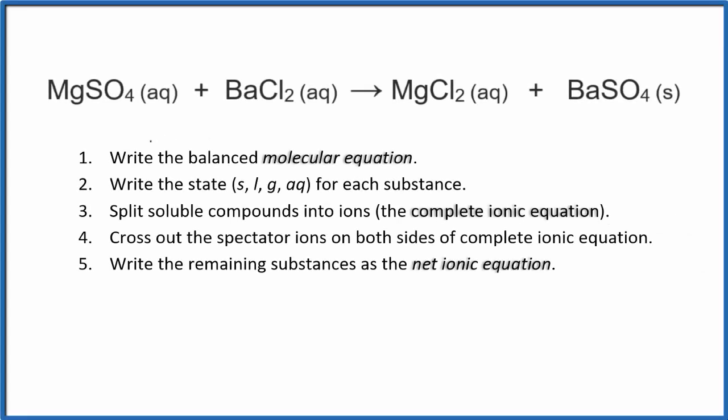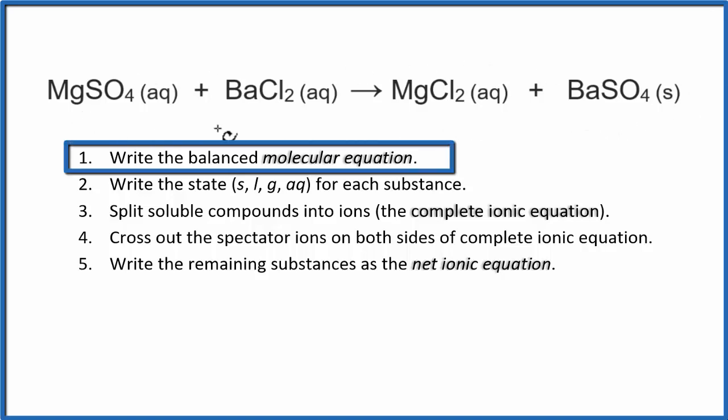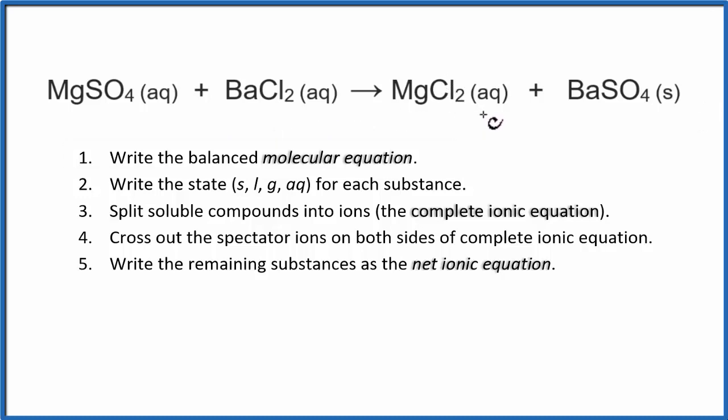In this video, we'll write the balanced molecular and net ionic equation for MgSO4 plus BaCl2, magnesium sulfate and barium chloride. So the first thing we need to do is write the balanced molecular equation. This is the molecular equation. It turns out that this is already balanced, so we don't need to do anything to this equation. It's balanced.